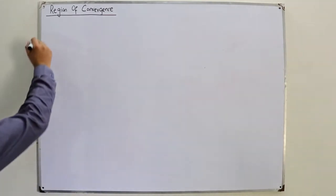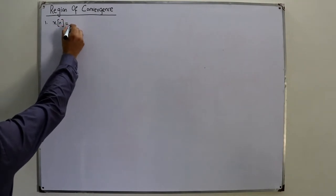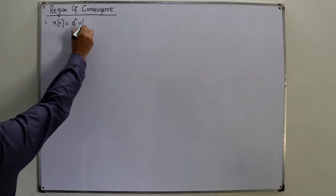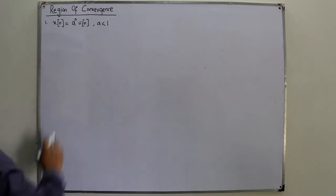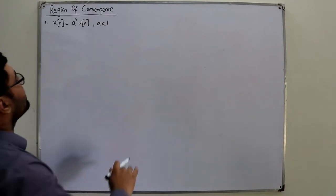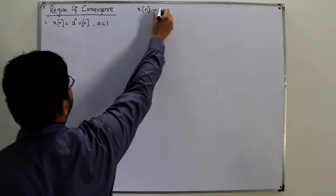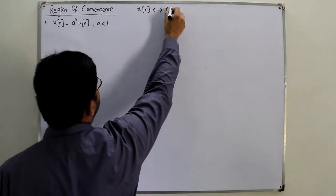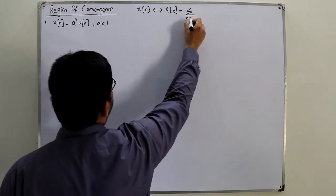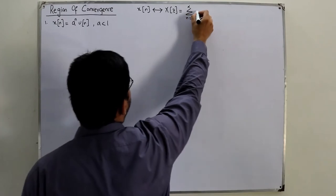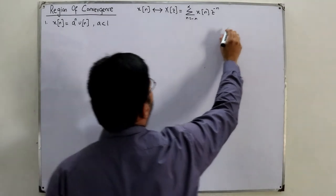Example one: the signal x(n) is given as a^n · u(n) with the value of a less than 1. First, keep in mind that for a signal x(n), the corresponding X(z) — the Z-transform — is the summation from n = negative infinity to positive infinity of x(n) multiplied by z to the power negative n.